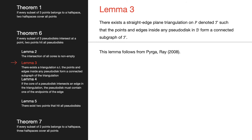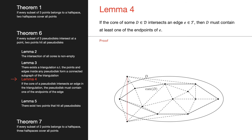Lemma 3 states that there exists a straight-edge plane triangulation T on our point set such that the points and edges inside any pseudodisk form a connected subgraph of T. The proof for this will not be covered, but it follows from Lemma 5 of the paper "New Existence Proofs for Epsilon Nets" by Pyrga and Ray.